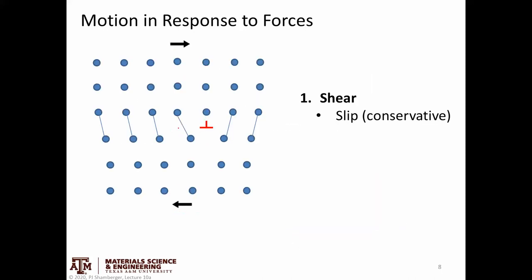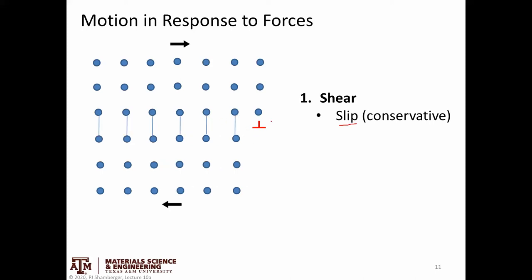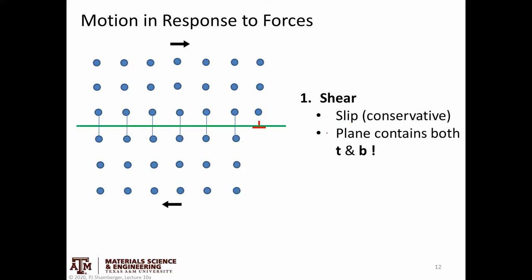All that's happening is breaking some bonds and reforming some bonds in a row of atoms along the dislocation, without adding or removing atoms. That's what conservative motion means, and it makes this kind of motion easier.